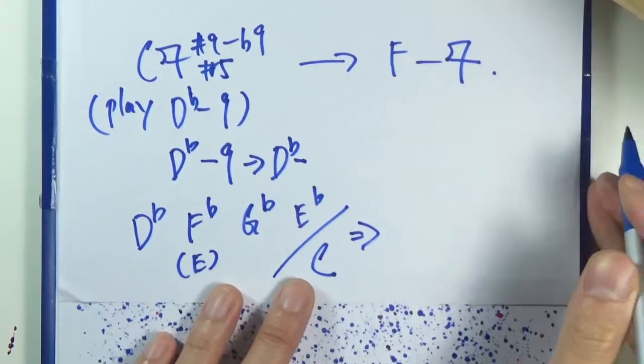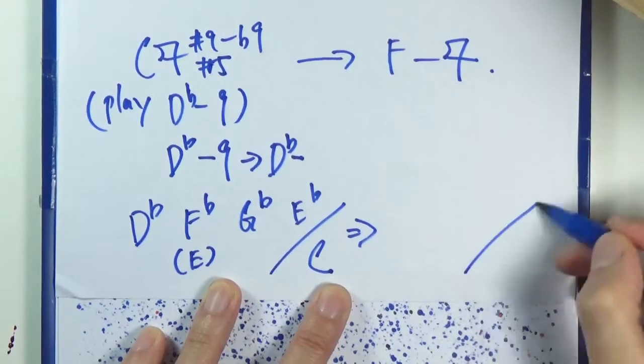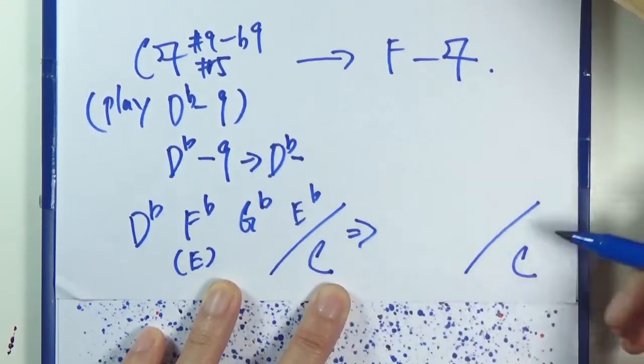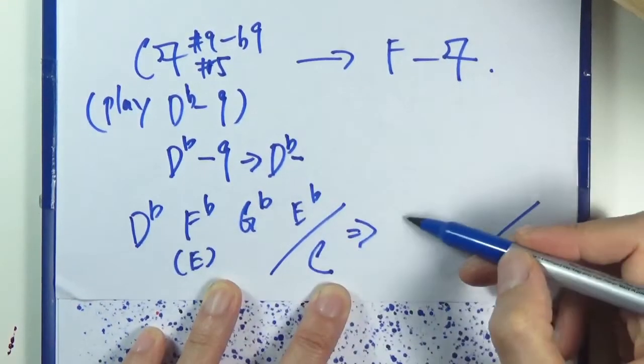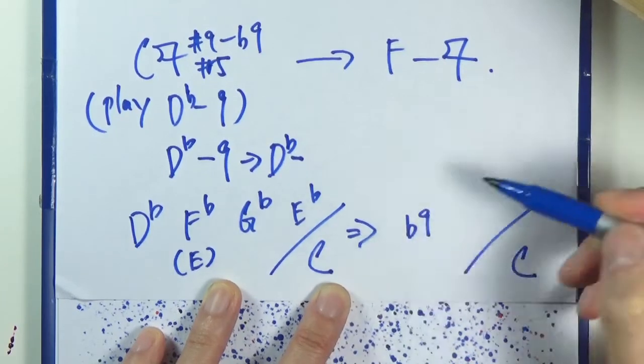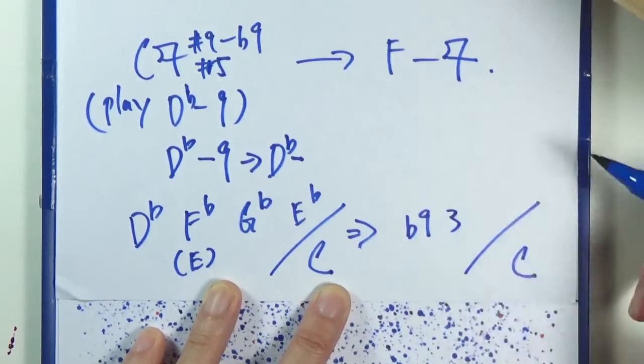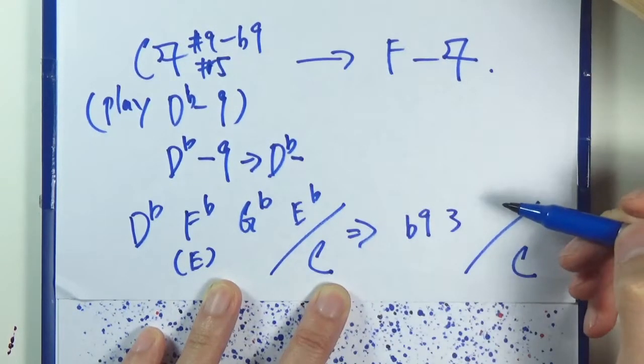F-flat is E, so third. G-flat is... sorry, I made a mistake, it's A-flat. A-flat, that's really G-sharp, right? So sharp five.